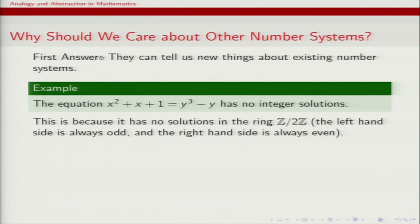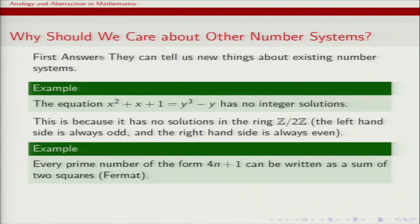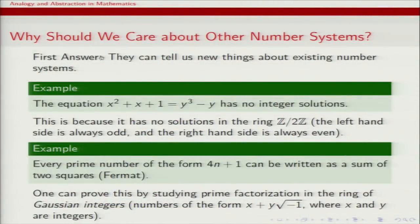A more sophisticated example is Fermat's two squares theorem — not his most famous — which asserts that every prime of the form 4n plus 1 can be written as a sum of two squares. There are many proofs, but one commonly taught in undergraduate number theory proceeds by studying a particular commutative ring: the ring of Gaussian integers, consisting of numbers of the form x plus i·y where x and y are integers. By studying this ring you can learn new concrete things about the usual integers.